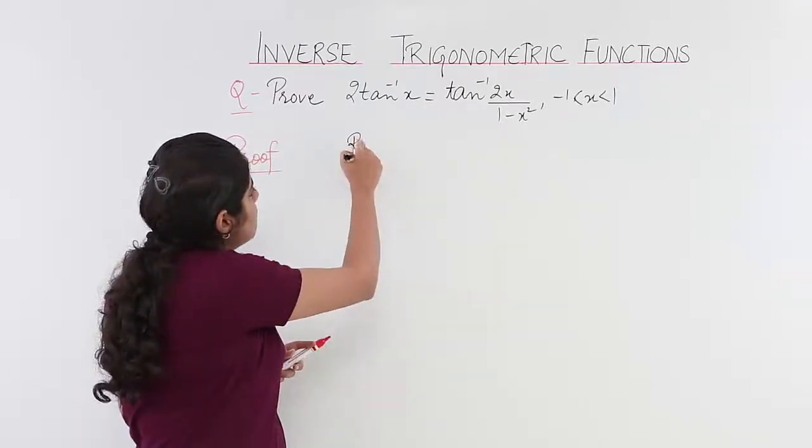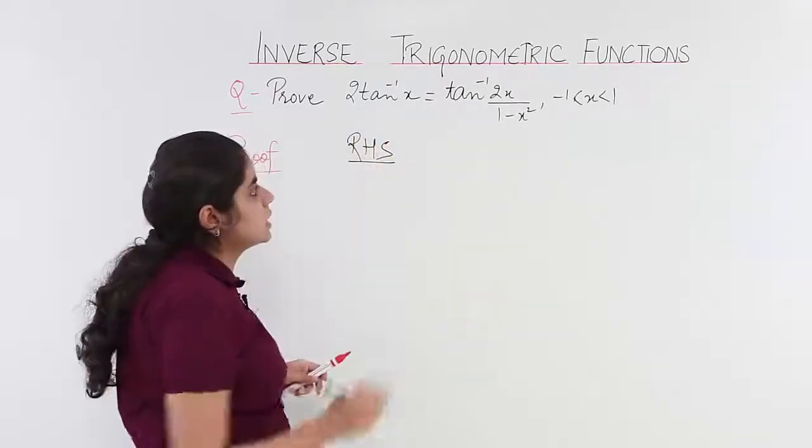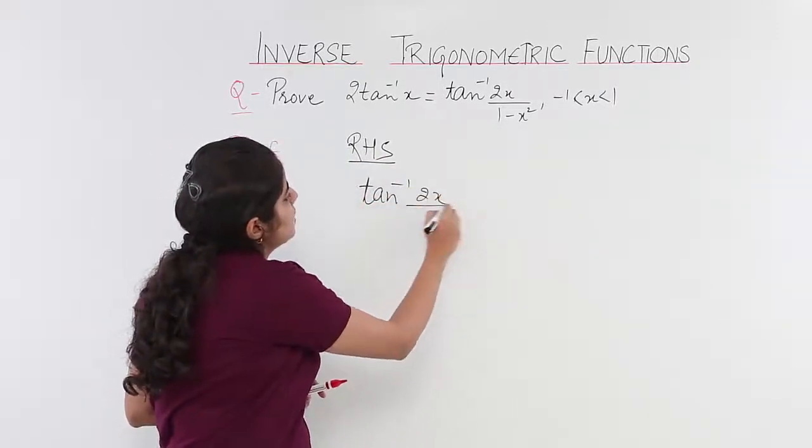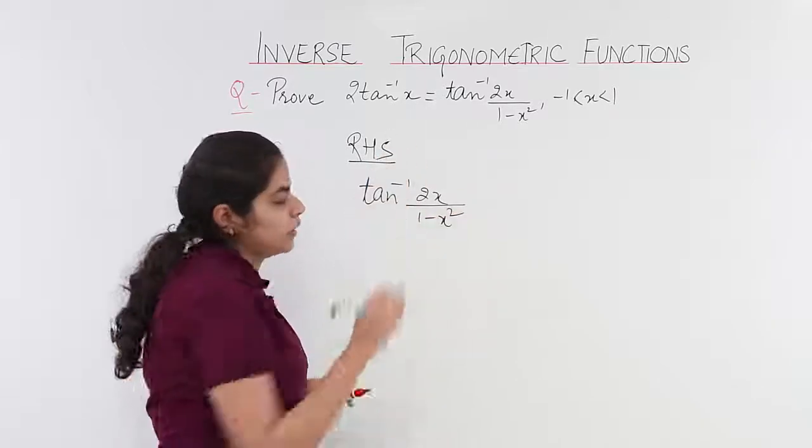Let me put the heading RHS, that is right hand side. Right hand side is what? Let's write it down. Tan inverse 2x upon 1 minus x square.